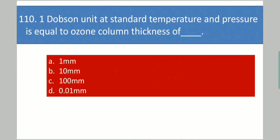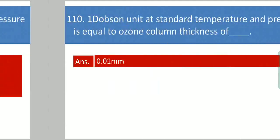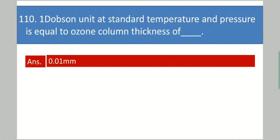Next question: One Dobson unit at standard temperature and pressure is equal to an ozone column thickness of dash. Your options are: 1 mm, 10 mm, 100 mm, or 0.01 mm. Your answer is 0.01 mm.